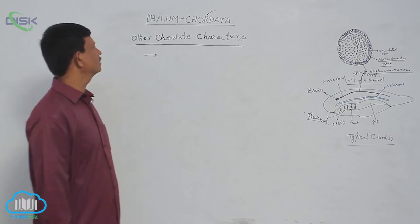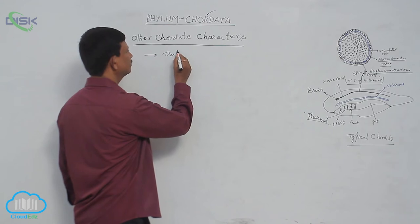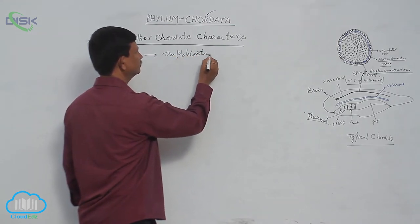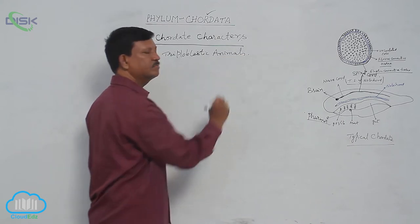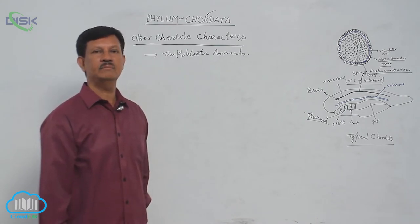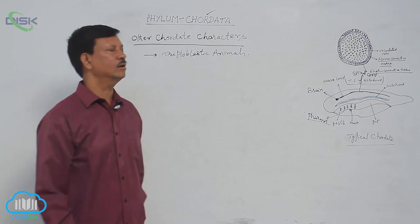Other chordate characters: they are triploblastic animals with the presence of three primary germ layers - ectoderm, endoderm, and mesoderm. These three germ layers develop into nine systems of the body, hence they are known as triploblastic animals.